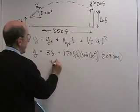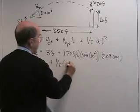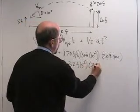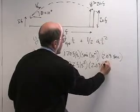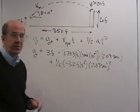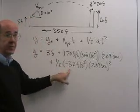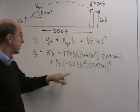Plus one half times minus 32 feet per second squared times 2.09 seconds squared. And notice I've done this meticulously. If I'm talking about y in the positive direction, that acceleration due to gravity has to be a minus sign.